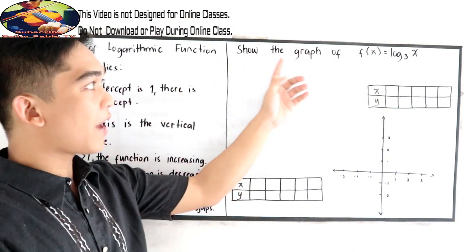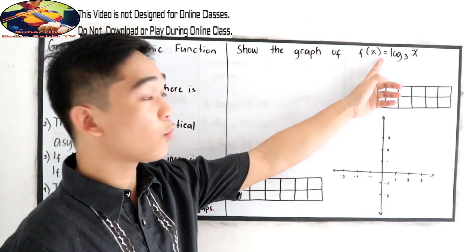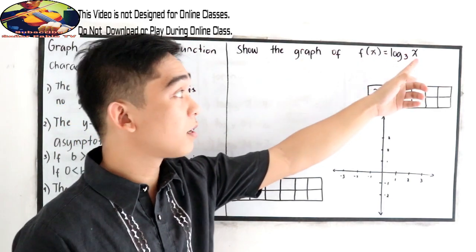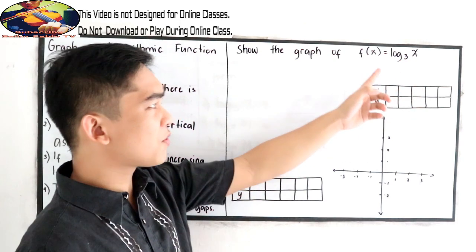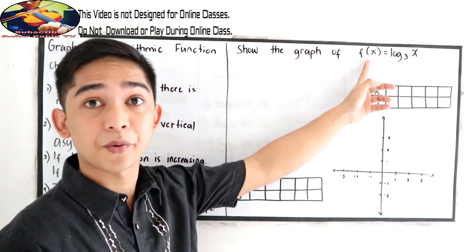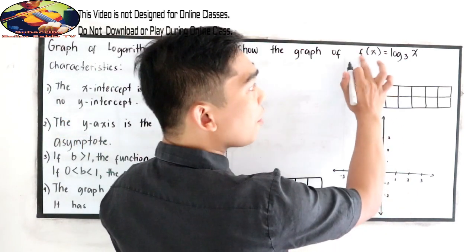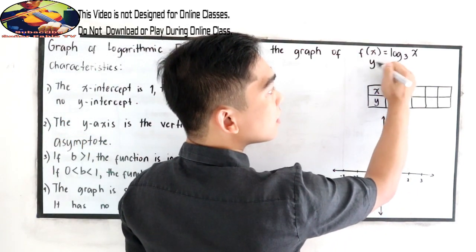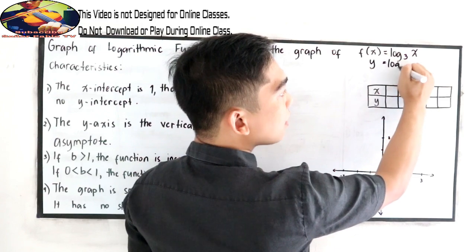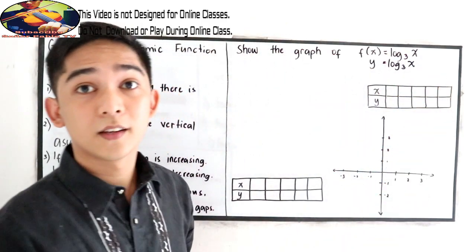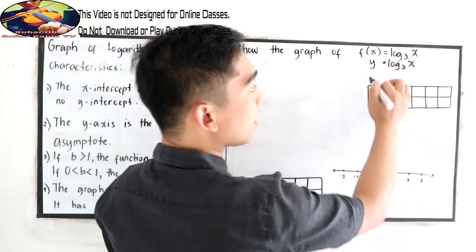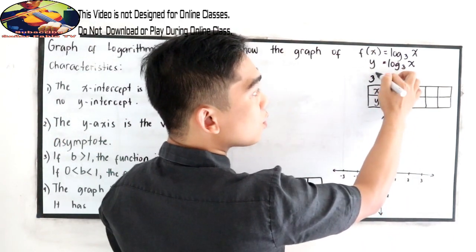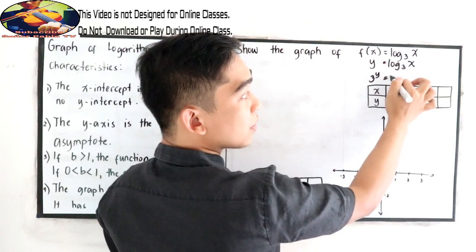Show the graph of f(x) is equal to log x base 3. First, let us write into exponential form. So f(x) that is equal to y is equal to log x base 3. So in exponential, our base is 3 raised to y is equal to x.